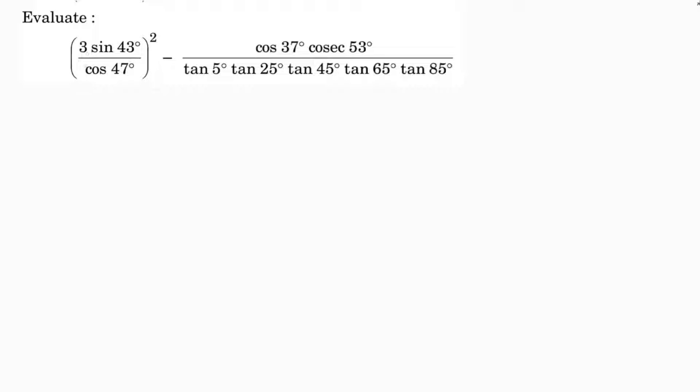Evaluate 3 sin 43 degrees by cos 47 degrees whole square minus cos 37 degrees cosec 53 degrees by tan 5 degrees tan 25 tan 45 tan 65 tan 85. This problem is based on complementary ratios, so here out of sin and cos, I'll change any one ratio.